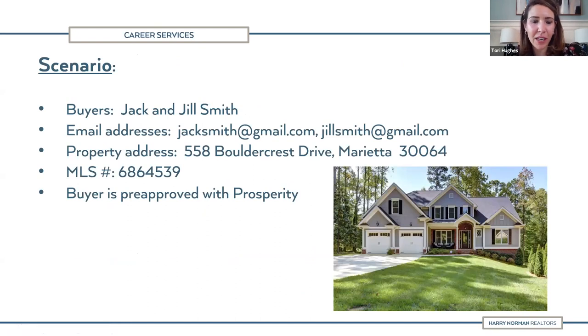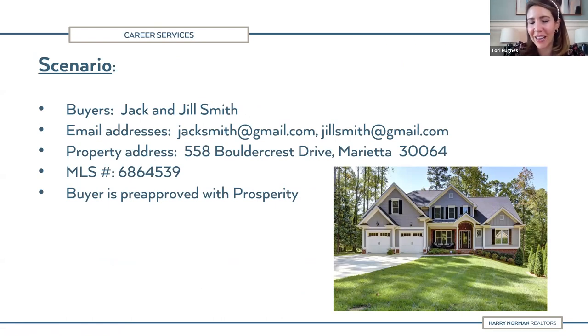The scenario we're working with today: we have buyers Jack and Jill Smith, we have their email addresses, and they've found a property at 558 Boulder Crest Drive in Marietta. This is one of Hicks Malonson's properties — it's actually under contract already, but we're pretending it's not. The MLS number is 686-4539, and the buyer is pre-approved with Prosperity and we already have their pre-approval letter. Now we're going into AppFiles to start creating their file.